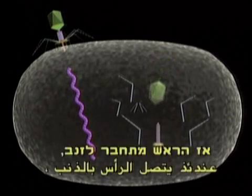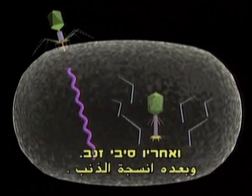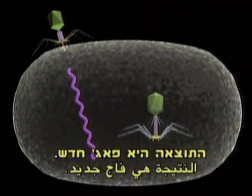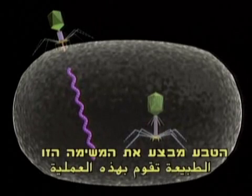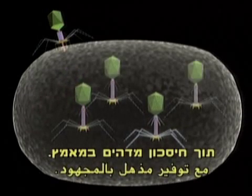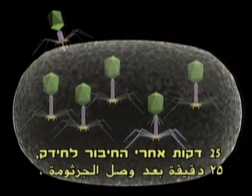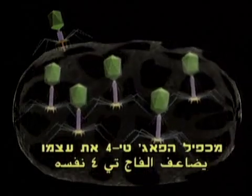Only when protein components for new phages have been assembled does the genetic ribbon enter its newly made head. Then the head attaches a tail, followed by tail fibers. The result is a newly made phage. Nature handles this operation with a remarkable economy of effort. Twenty-five minutes after locking onto a bacterium, the T4 phage has multiplied itself a hundredfold.